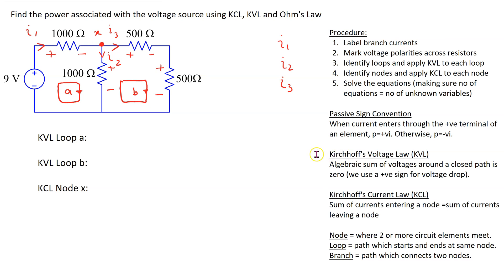Recall that Kirchhoff voltage law states that the algebraic sum of voltages around a closed path is 0. And in writing the KVL expression we use a positive sign for the voltage drop following passive sign convention.